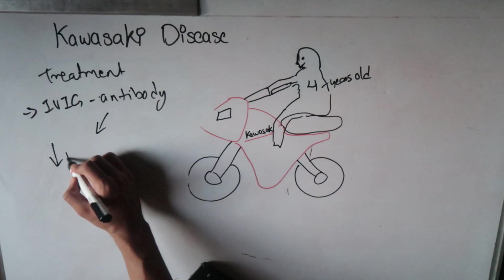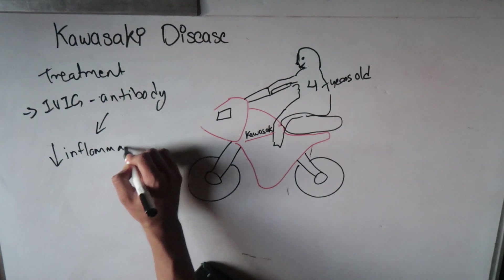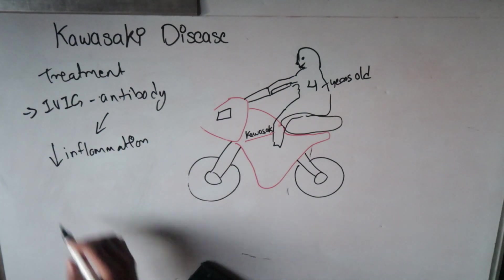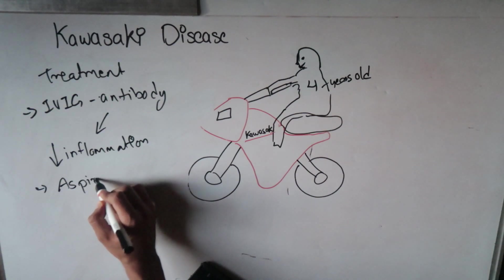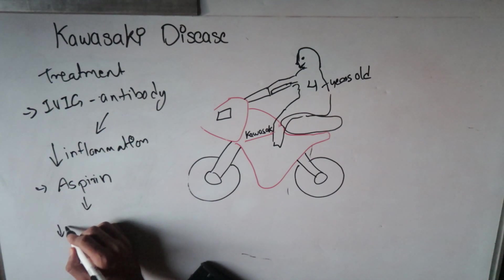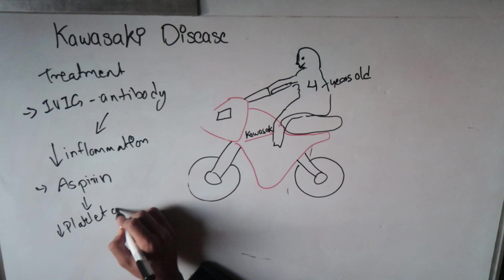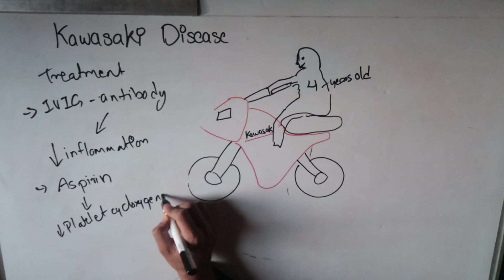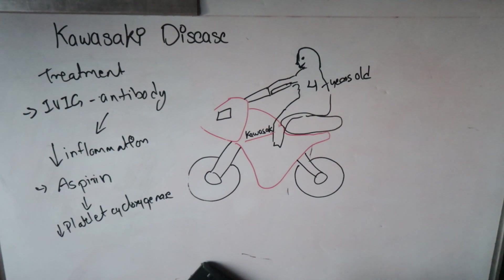This will reduce inflammation. Also we can give aspirin. Aspirin will inhibit platelet cyclooxygenase. It will decrease the function of platelet cyclooxygenase enzyme, which will prevent platelets from aggregating together. But we have to be careful while giving aspirin because it can cause Reye syndrome, which is hepatic encephalopathy in children. While giving aspirin, monitoring should be done. Thank you.